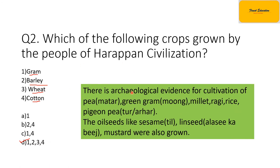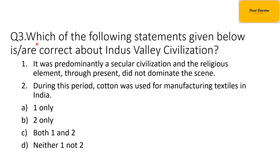There are archaeological evidences for the cultivation of crops like pea (known as murtr in Hindi), green gram (mung in Hindi), millet, ragi, rice, and peas (tul in Hindi). If we talk about oil seeds, we have sesame (called alcee in Hindi) and mustard (also called alcee bees in Hindi).